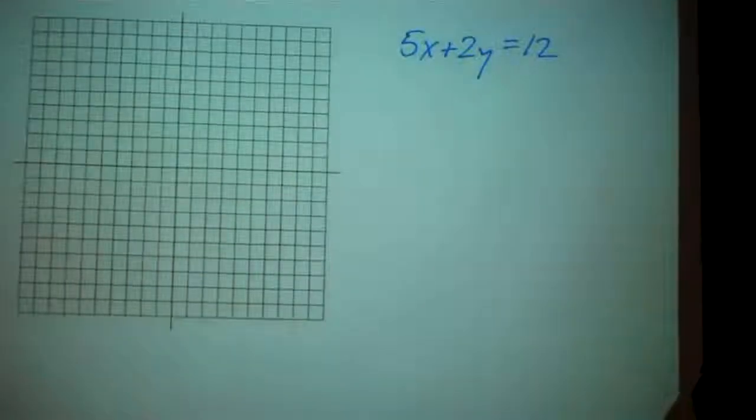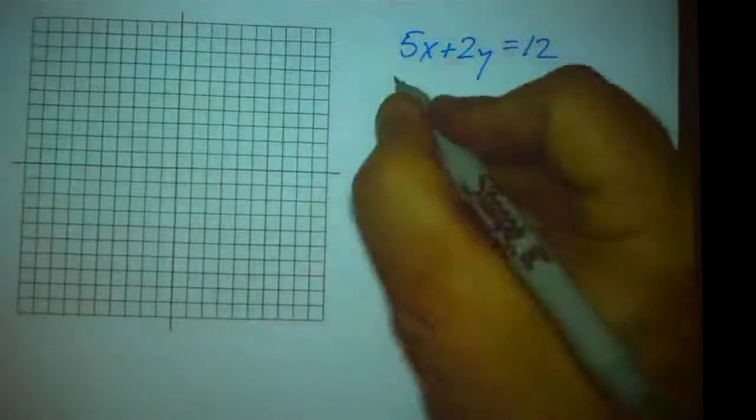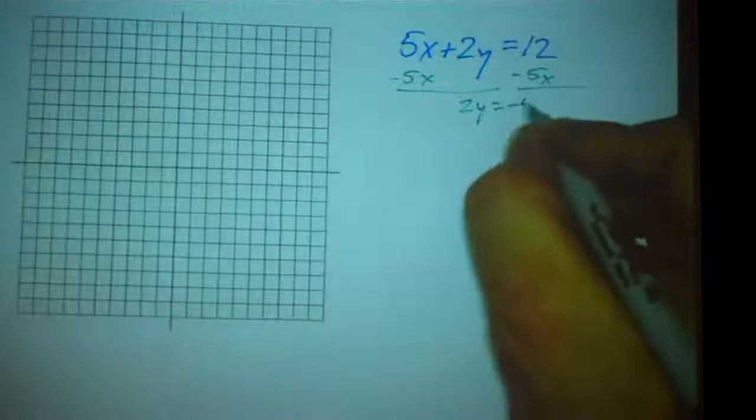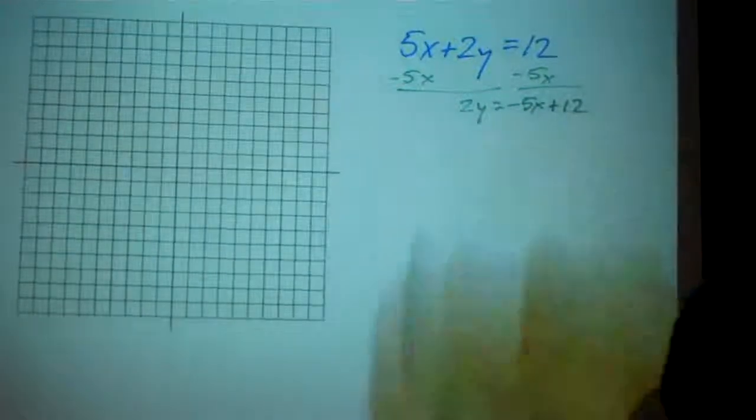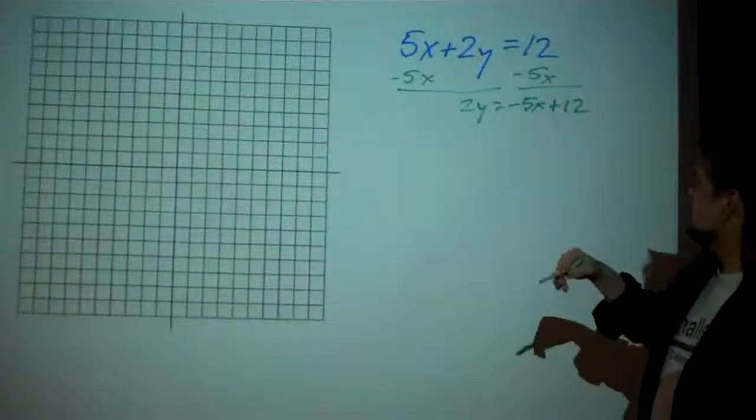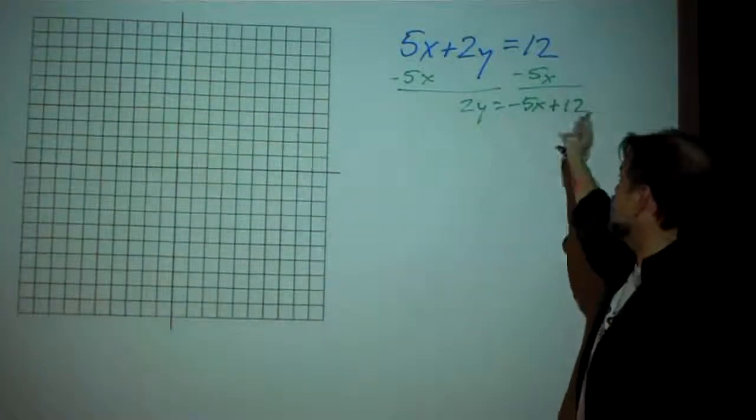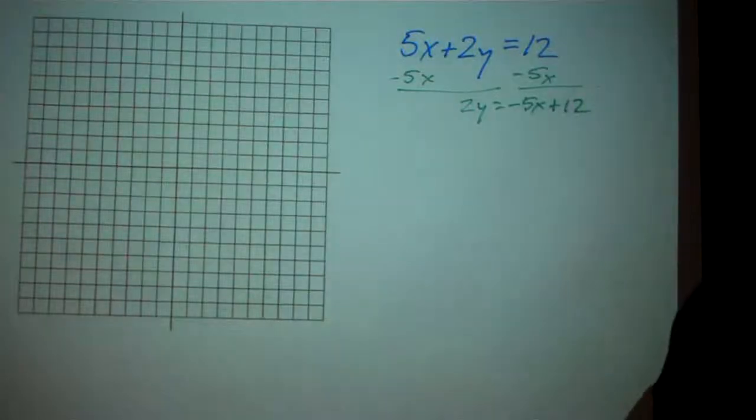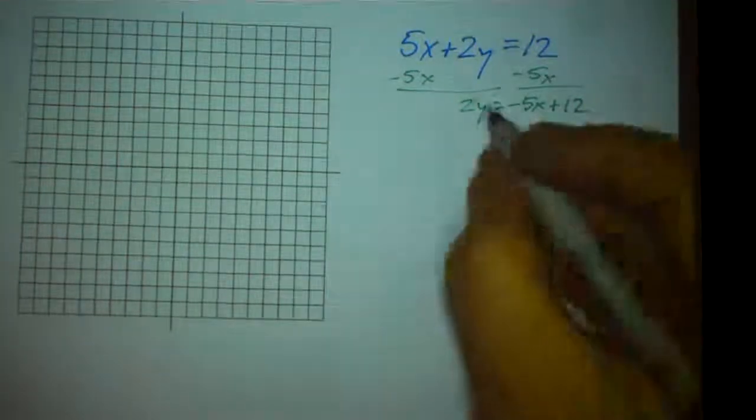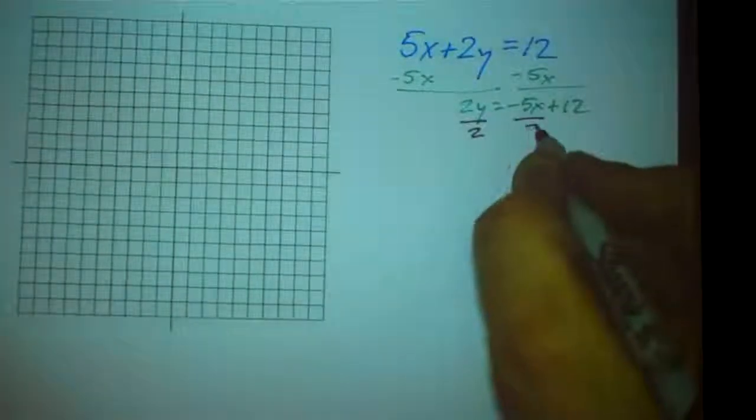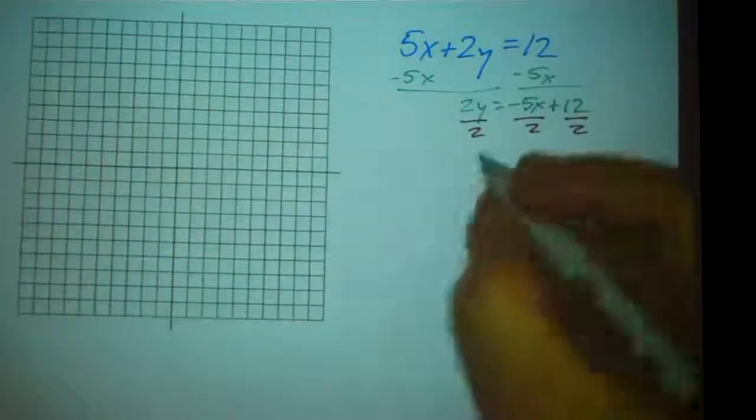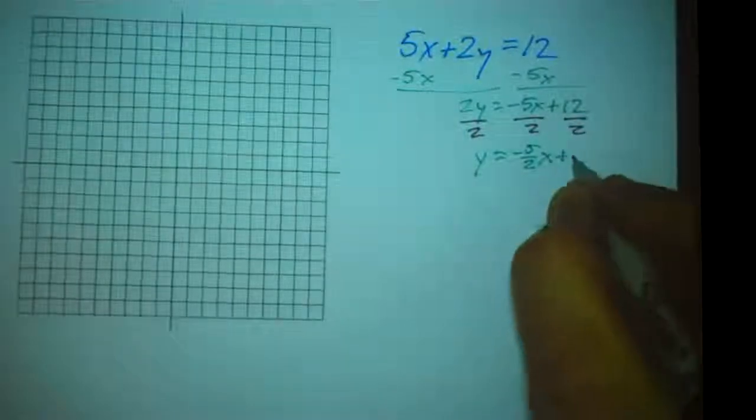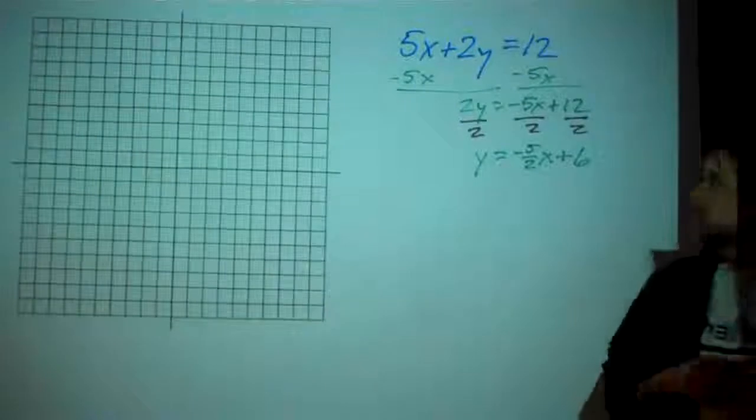First thing we would do is we would subtract 5x from both sides, and we're going to get 2y equals negative 5x plus 12. So now this is 2y equals negative 5x plus 12. So don't look at that and think that you're done yet. Negative 5 is not the slope. We are not done yet because now we need to divide everything that we see by 2. And that's going to get us y equals negative 5 halves x plus 6.